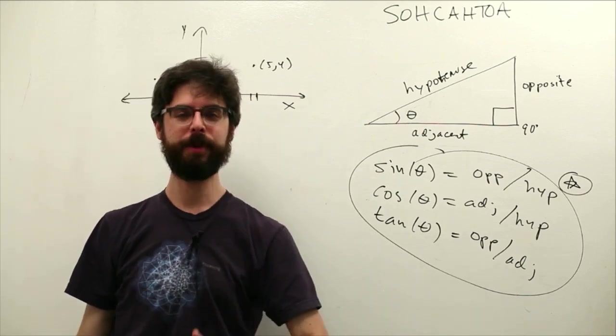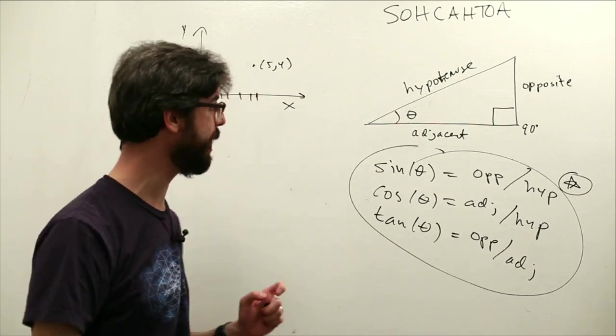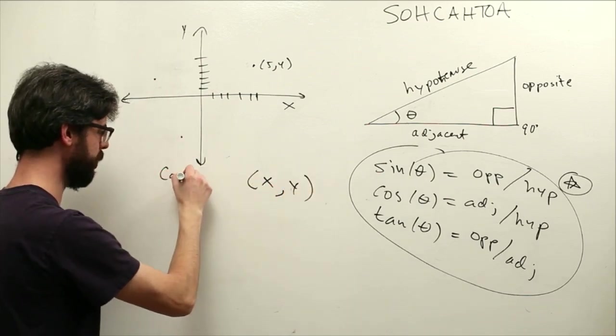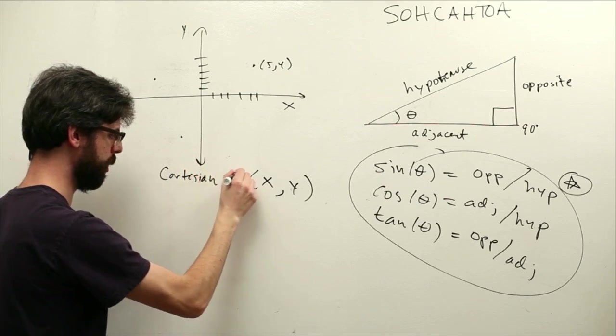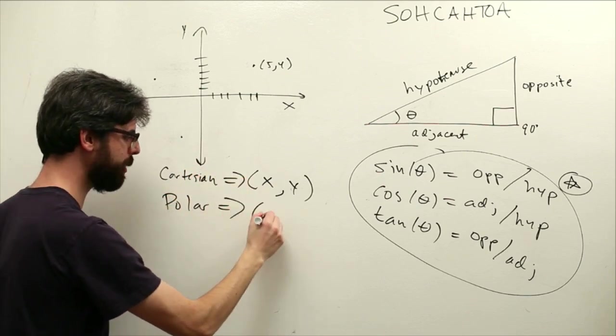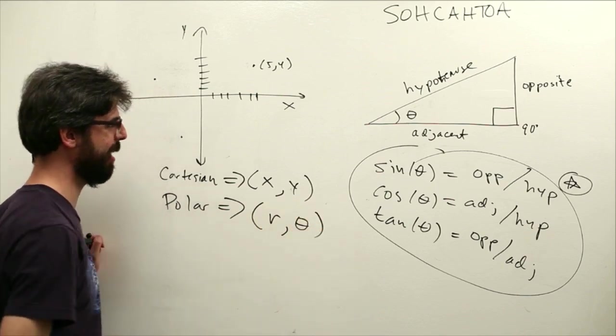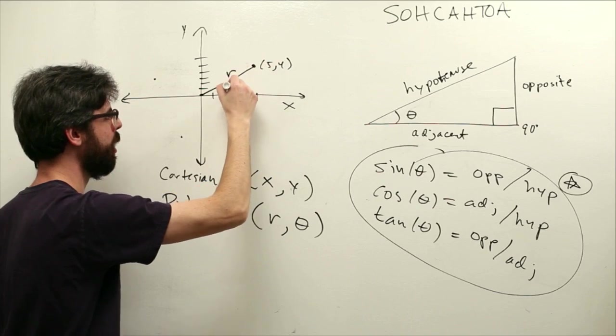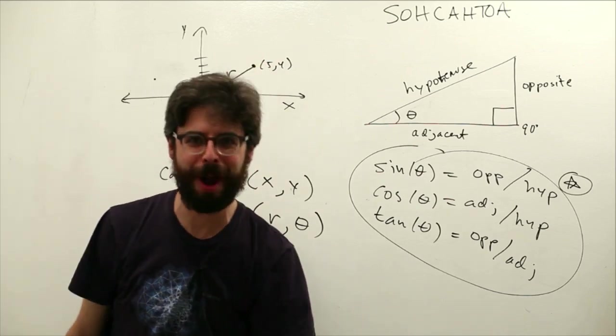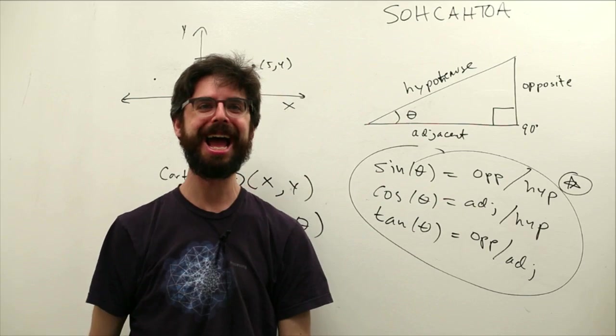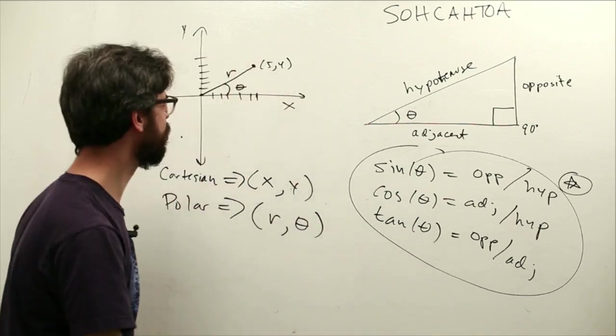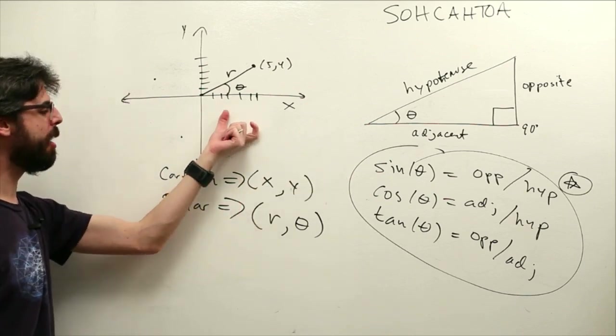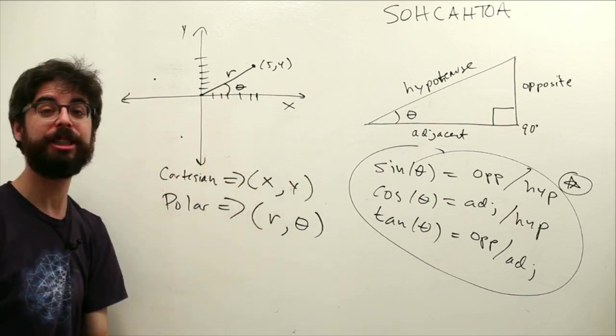A polar coordinate is a different way of thinking about a location in two-dimensional space. Instead of describing an x and a y, that is Cartesian, a polar coordinate describes an r and a theta. What do we mean by that? An r and a theta. So you can get anywhere on the screen by saying, hey, go to this x and go to this y. Or you could say, rotate by this angle and go to this radius, right? So this is a way of thinking about locations on the screen.